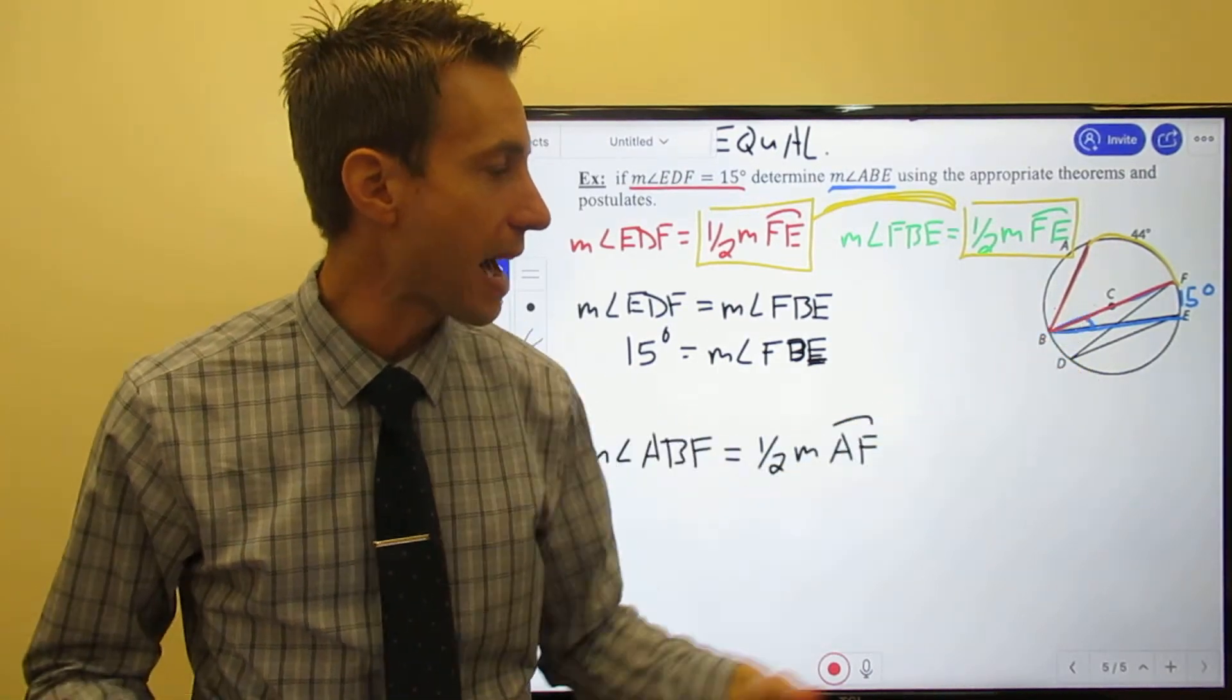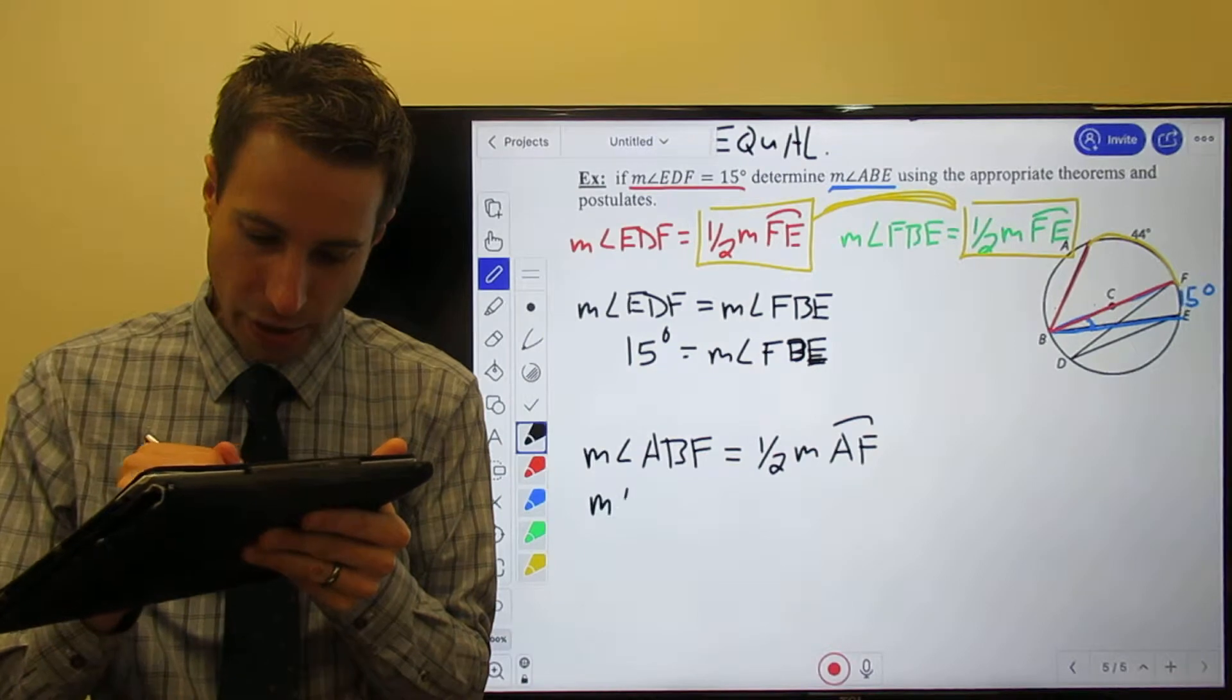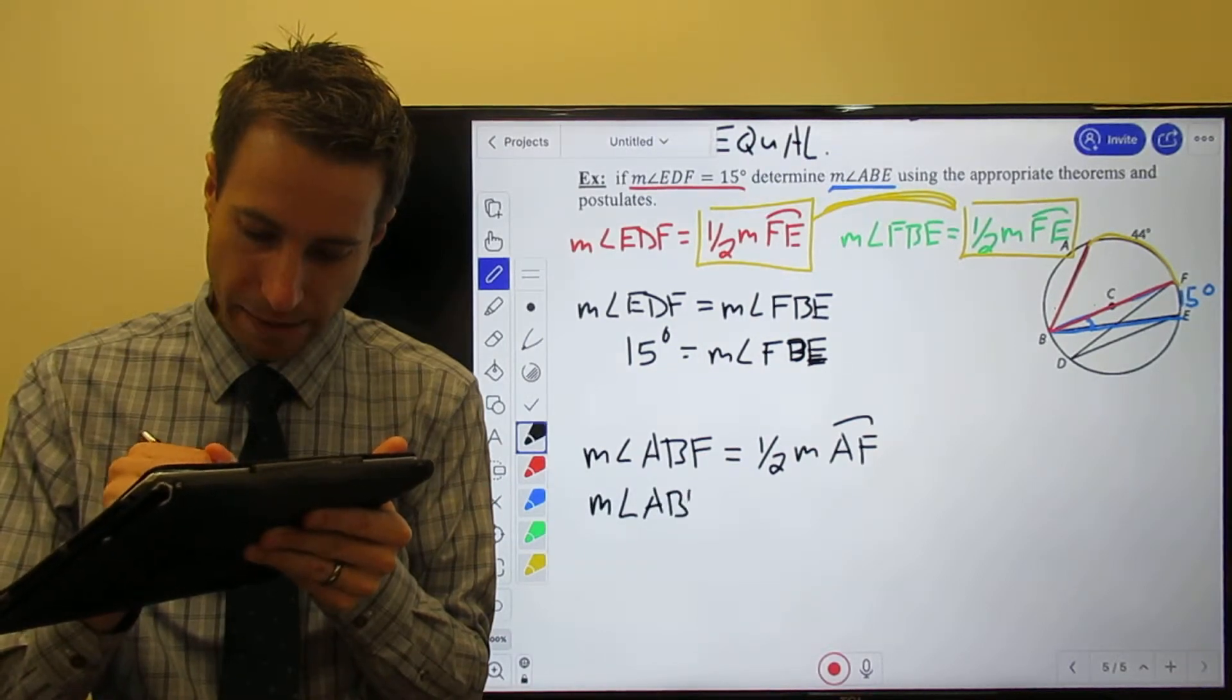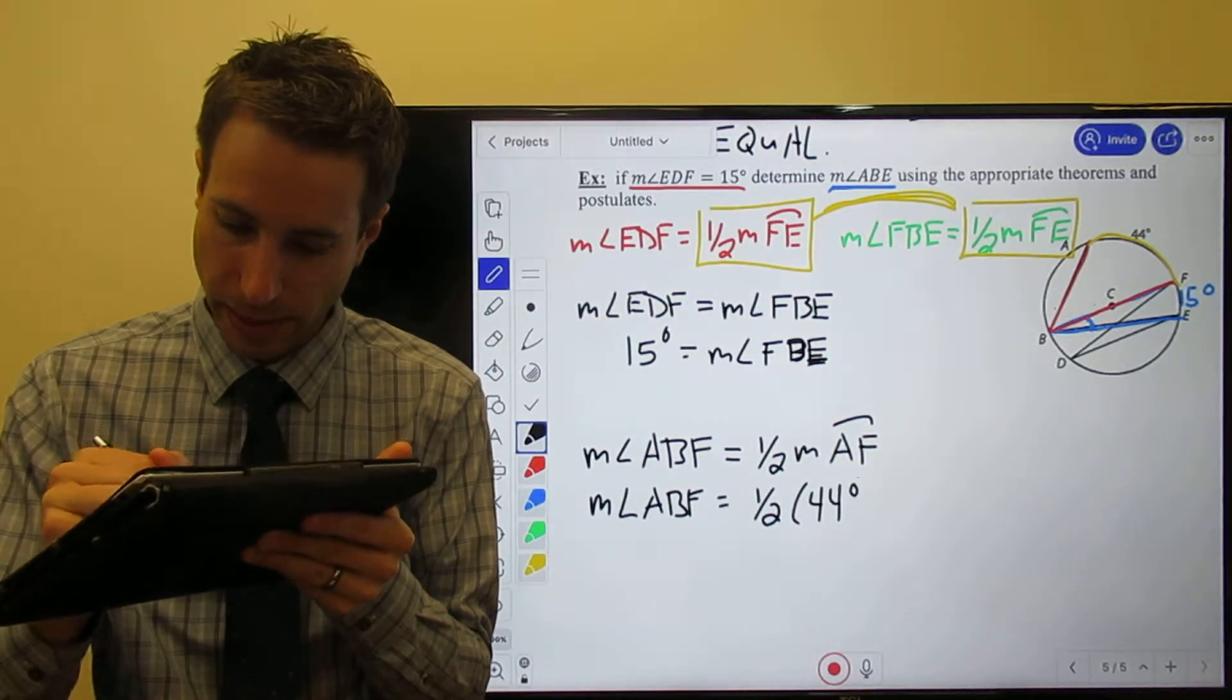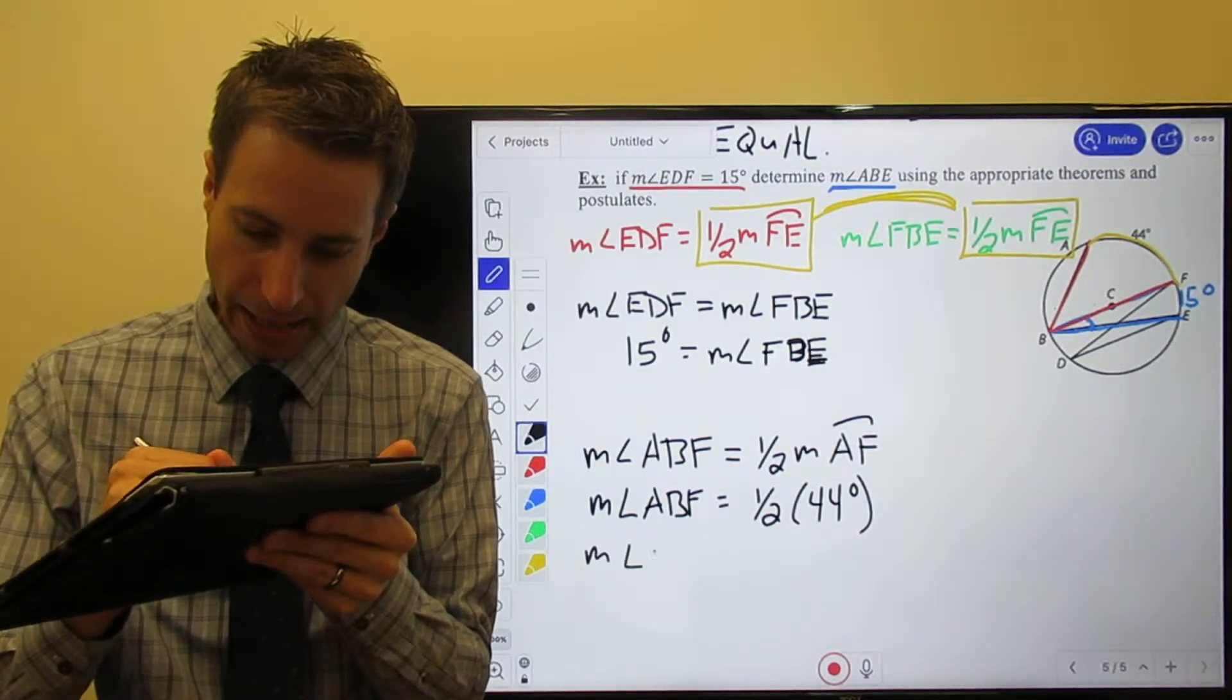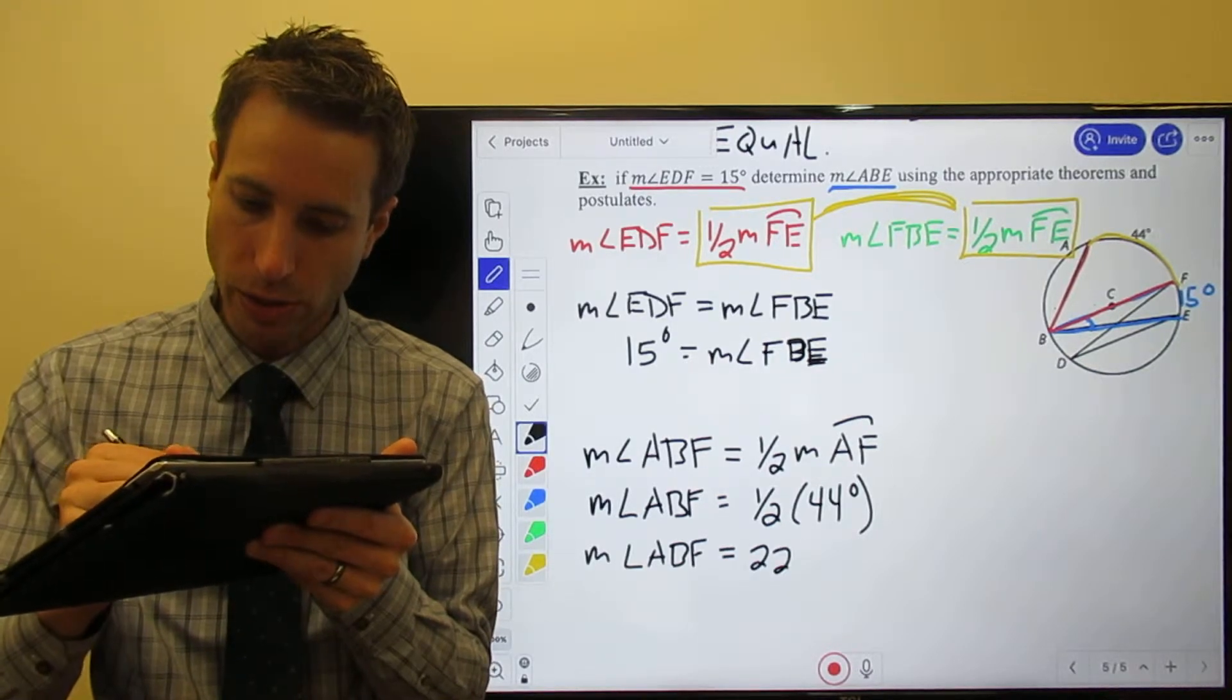So the measure of angle ABF is equal to one-half of 44 degrees. So the measure of the angle is 22 degrees.